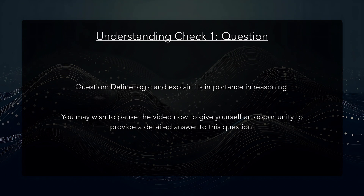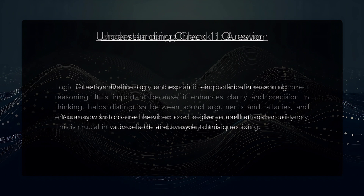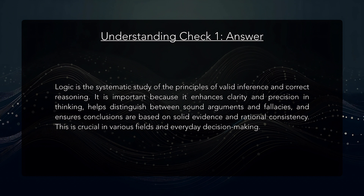Let's take a look at a question to check our understanding of the material just presented. You may wish to pause the video now to give yourself an opportunity to provide a detailed answer. Question: Define logic and explain its importance in reasoning. Answer: Logic is the systematic study of the principles of valid inference and correct reasoning. It's important because it enhances clarity and precision in thinking, helps distinguish between sound and valid arguments and fallacies, and ensures conclusions are based on solid evidence and rational consistency. This is crucial in various fields and in everyday decision-making.